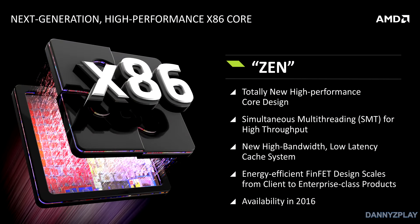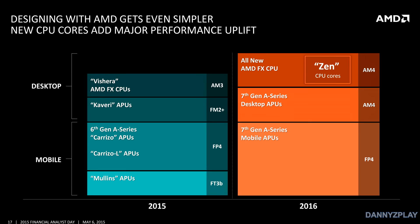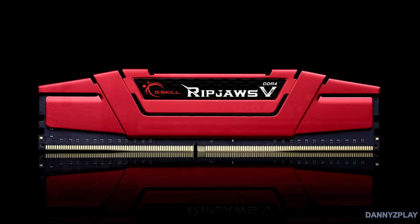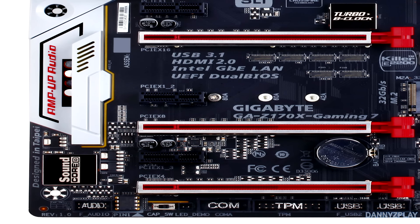Included in Zen will be a high-bandwidth, low-latency cache. AMD's new Zen processors will be produced on the new 14 nanometer FinFET process from GlobalFoundries. The new Zen CPUs will be on a completely new platform called AM4 and FP4. The FP4 platform is for mobile processors yielded from Zen, while the enthusiast-grade processors and APUs will be on AM4. This AM4 platform will have support for DDR4 and PCIe Generation 3.0.